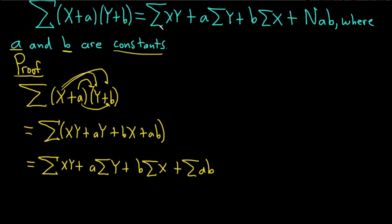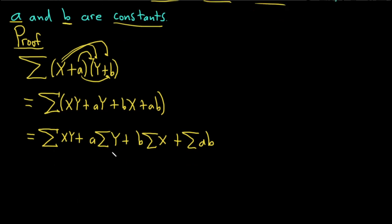So we're almost there, right? We have the xy, we have the ay, we have the bx, all that's good. We just have to deal with this. Let's go ahead and finish it up. This is equal to the sum of xy plus a times the sum of y plus b times the sum of x.